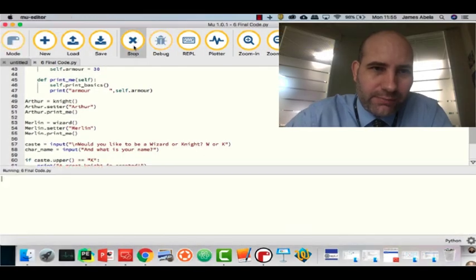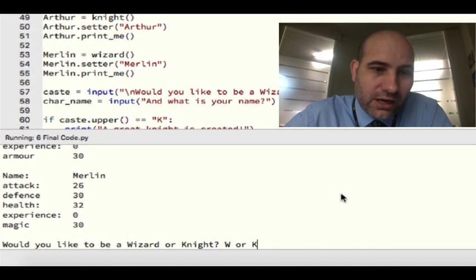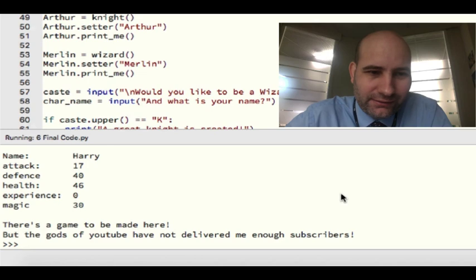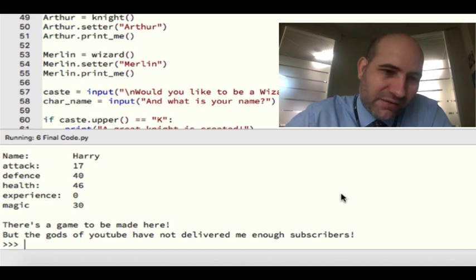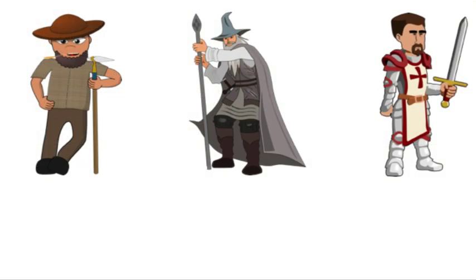Let's just have a little run through this program and see how it goes. So the first thing it does is it creates Arthur and Merlin. And then you get to choose. I've chosen a wizard. Let me think. Who's a good wizard? Ah, Harry. Now there's a game to be made here. And I would be very happy to make that game. But that's enough for your A-levels. If the gods of YouTube deliver me a few subscribers, then I'll consider making the rest. Thank you very much.